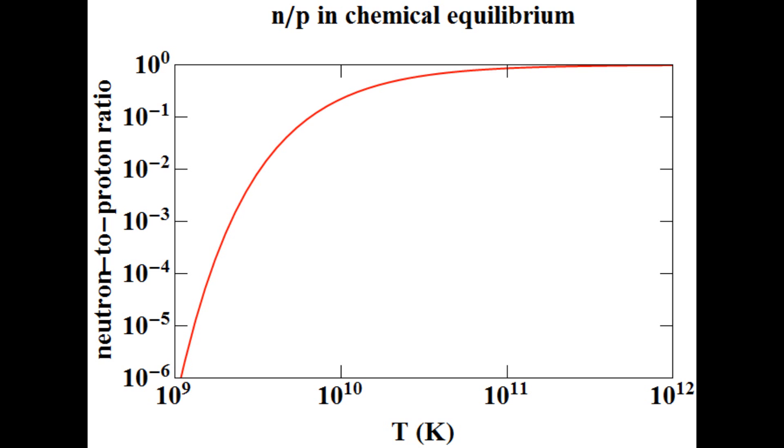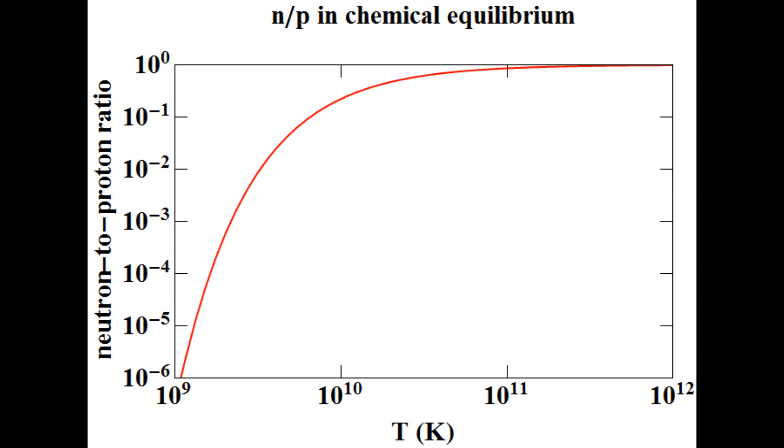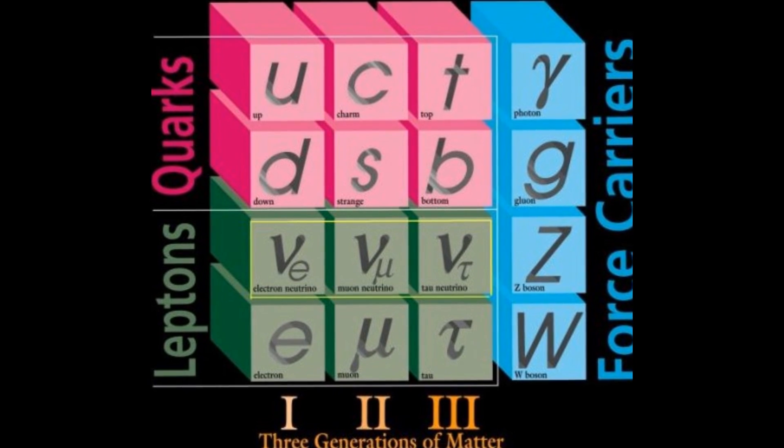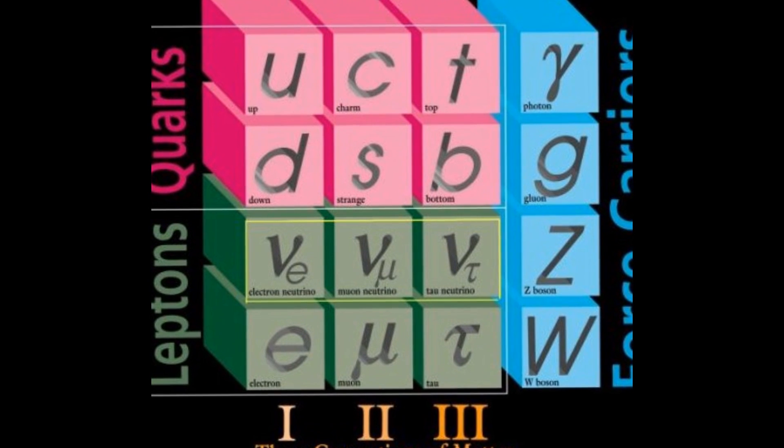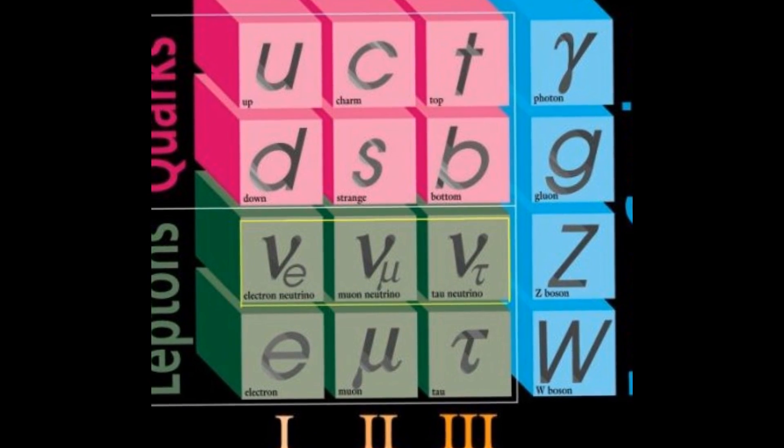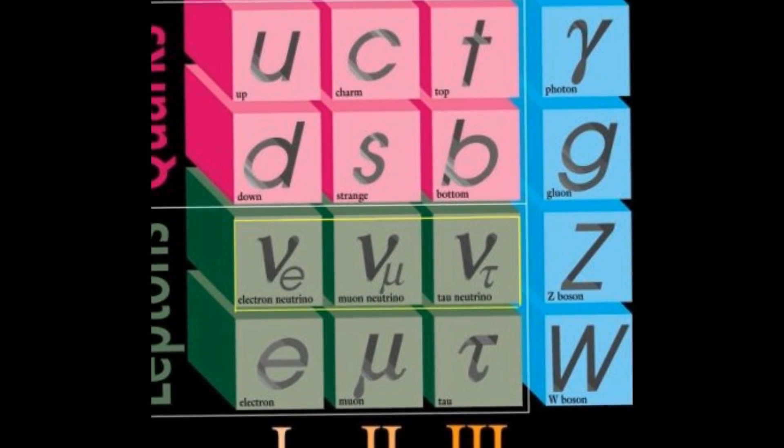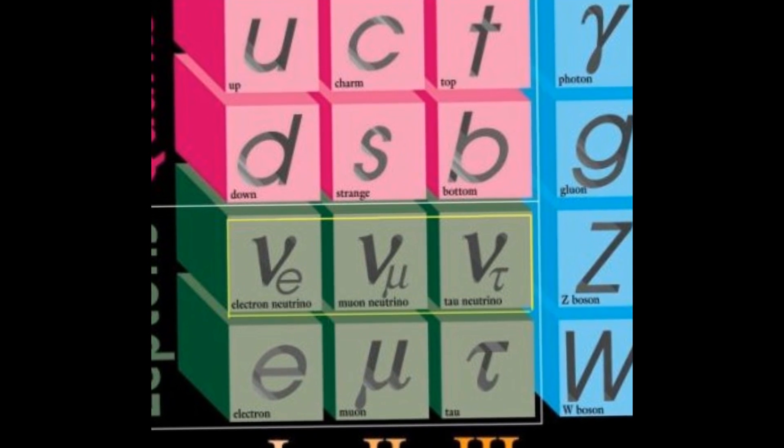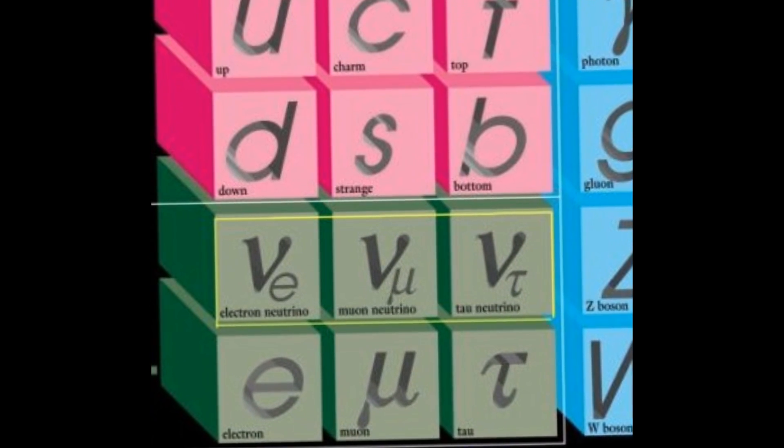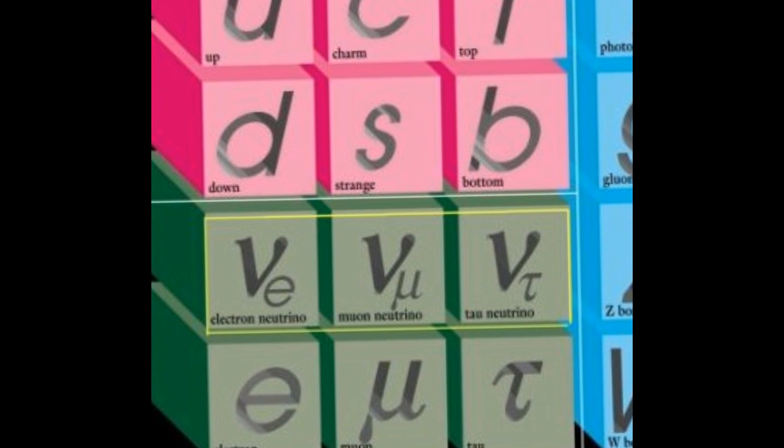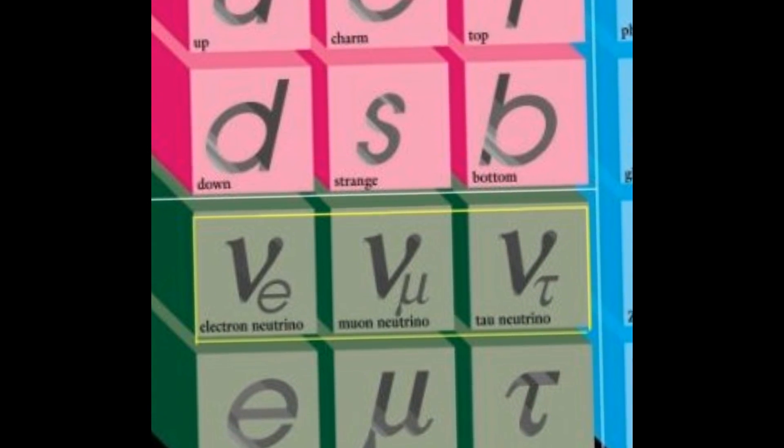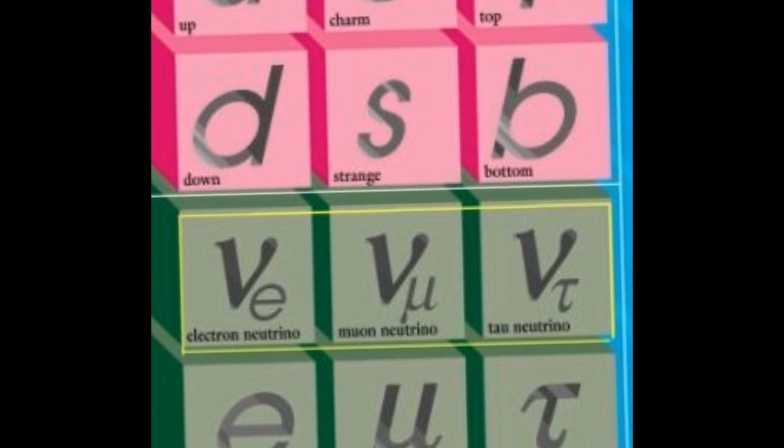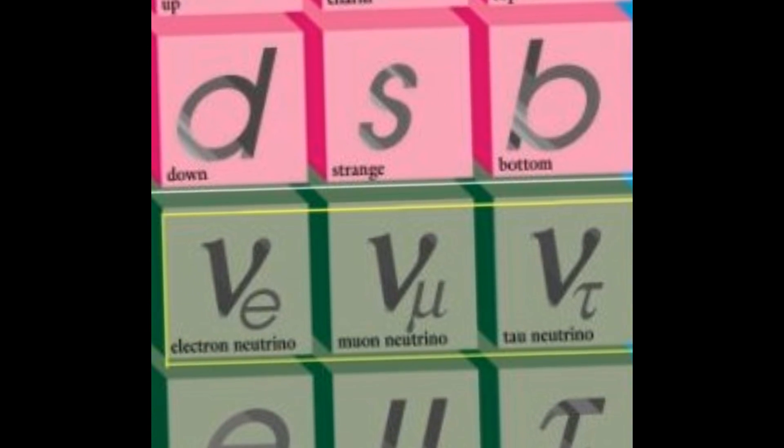But by one second after the Big Bang, only 17% of nucleons were neutrons. At this time in the history of the universe, the temperature and density were so high that particles called neutrinos were present in copious amounts. Neutrinos have very low mass and no electric charge, and they can only interact via the weak force. There are three kinds of neutrinos, called electron, muon, and tau neutrinos, and their corresponding anti-neutrinos.